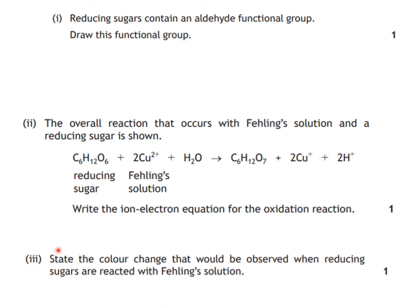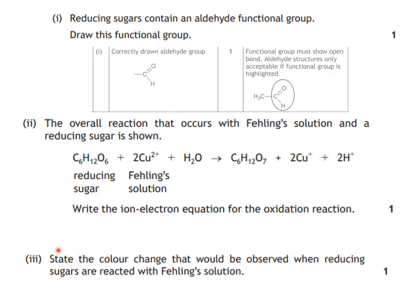Hopefully the first one was fairly straightforward. Draw the functional group for an aldehyde — that's what we've been learning recently. It is a carbonyl group. The functional group must show an open bond. The aldehyde structure is only acceptable if the functional group is highlighted. In other words, if you put the whole chemical of an aldehyde, you would then have to highlight that carbonyl group along with the hydrogen as well.